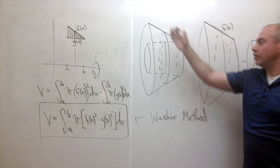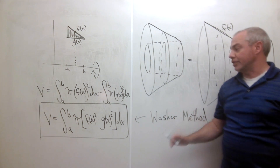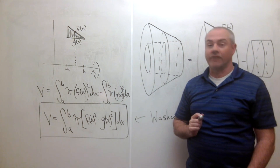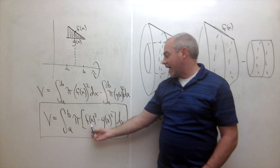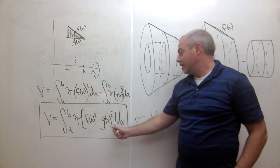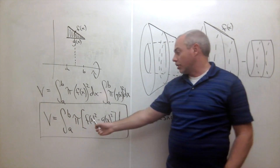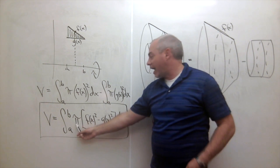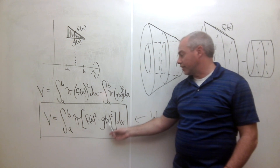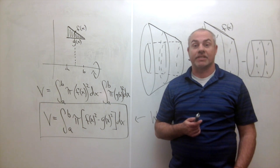If all of the cross-sections of your shape look like washers, this is how you find the volume. Remember that f(x) is the outer radius and g(x) is the inner radius, so it's π times the outer radius squared minus the inner radius squared dx. Now let's look at some examples.